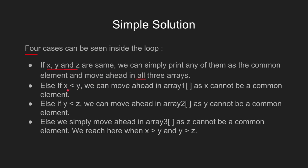In case 2, when x is smaller than y, x will surely not be the common element. So we can move ahead in array 1. Case 3, when y is less than z, in this case, y will surely not be the common element. So we can move ahead in array 2. In the fourth case, when z is the least element, we move ahead in array 3 as it cannot be the common element.